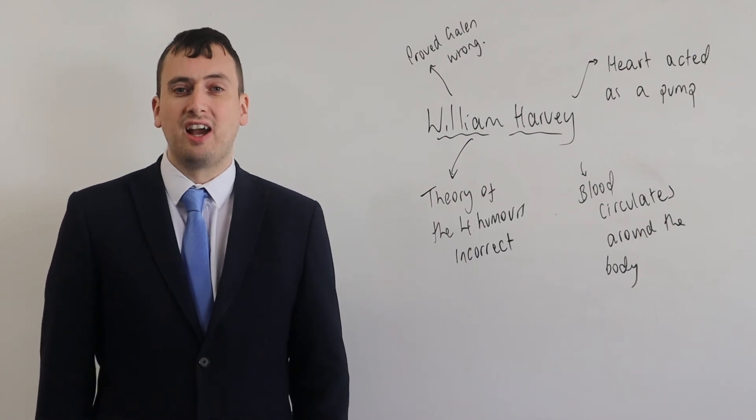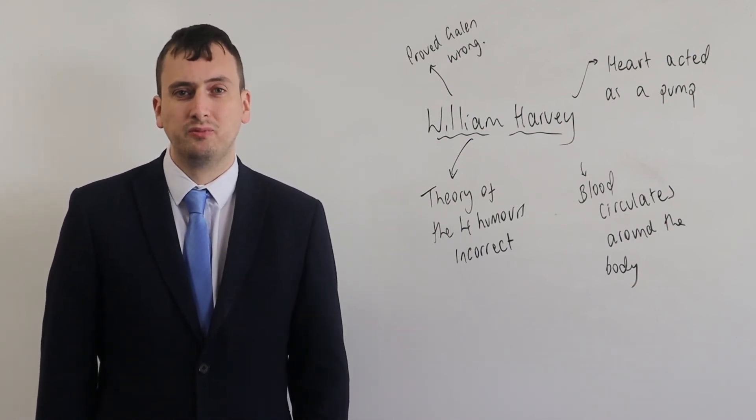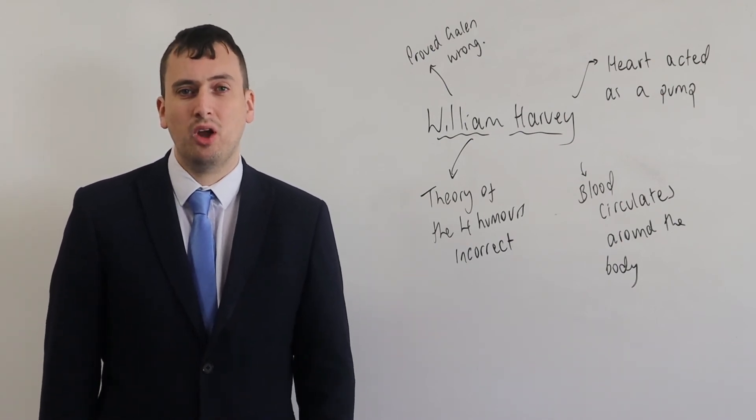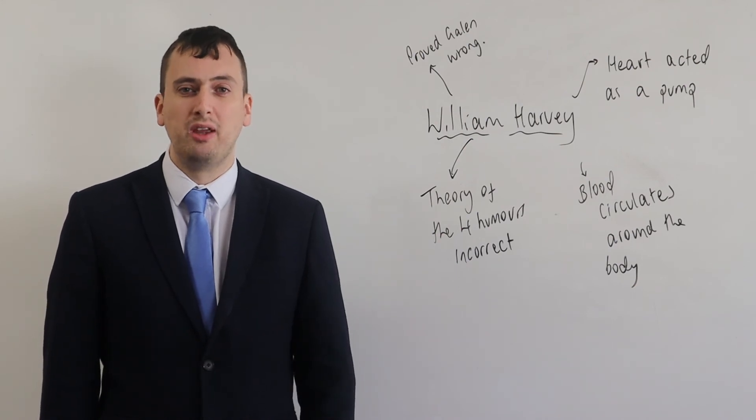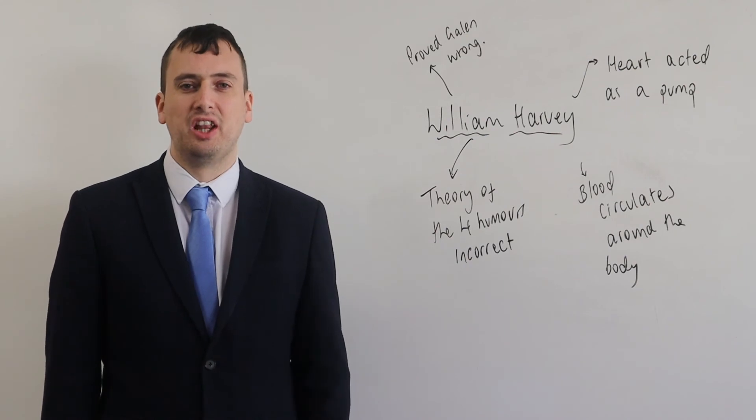He also tried to calculate the amount of blood which was coming through the arteries every hour. When he did so, he calculated that the amount of blood going through the arteries every hour was approximately the weight of three men. Therefore, blood had to circulate around the body.